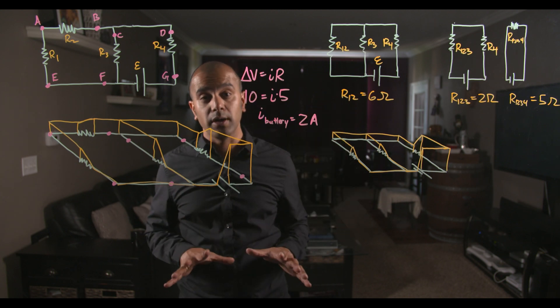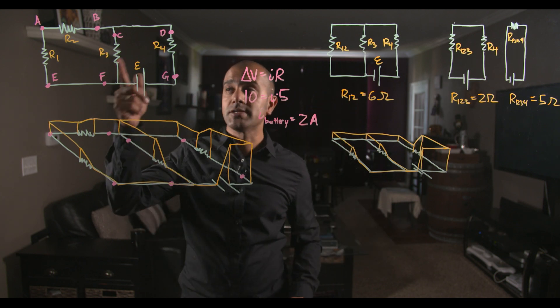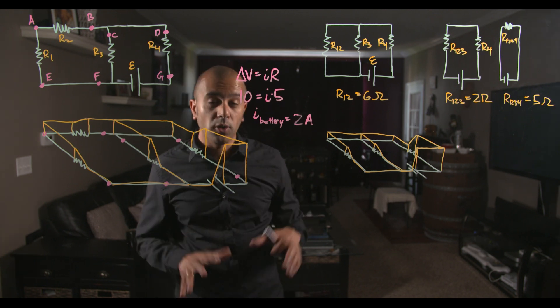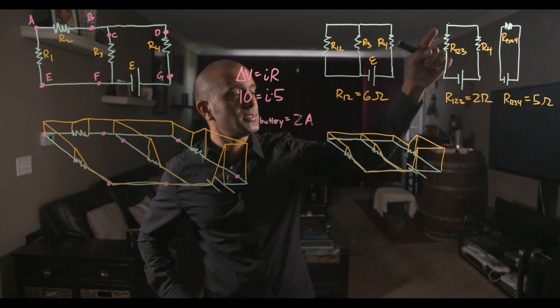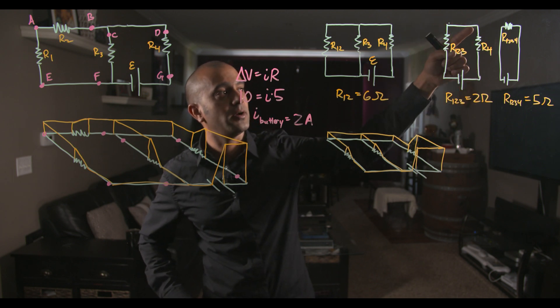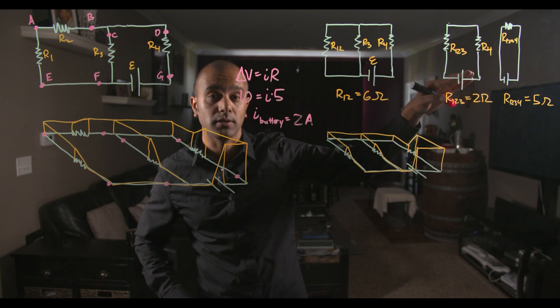So now that we have the current through the battery, we're going to go backwards to find the current at point B using Ohm's law and our voltage maps. So we know that the current in the battery is 2 amps. Since this is a single loop and there's no forking, you're not forking off in other branches, then the current everywhere in the circuit is 2 amps.